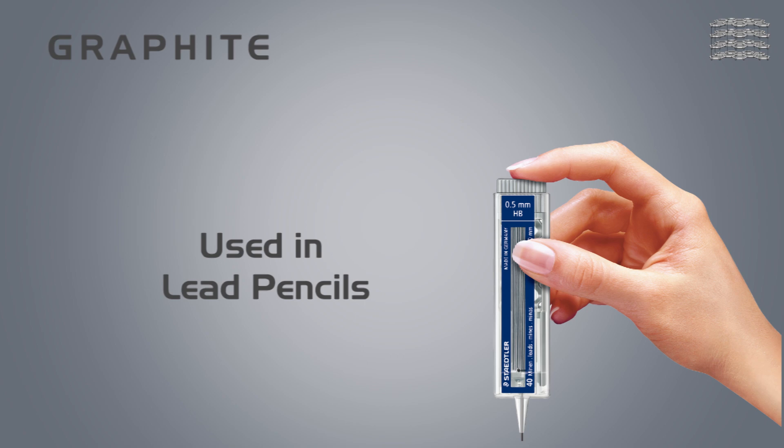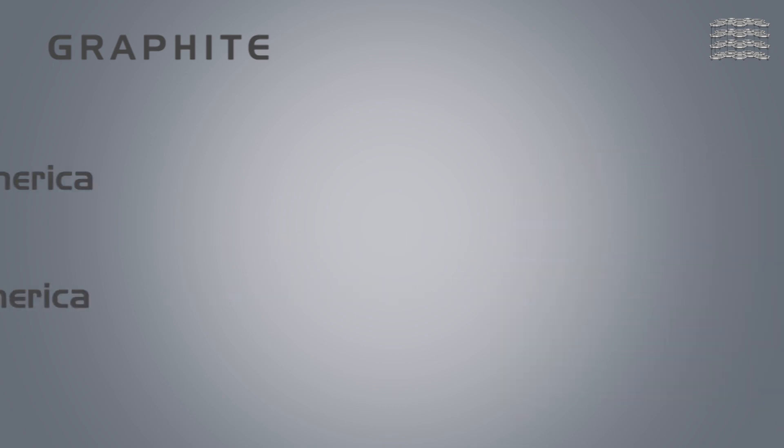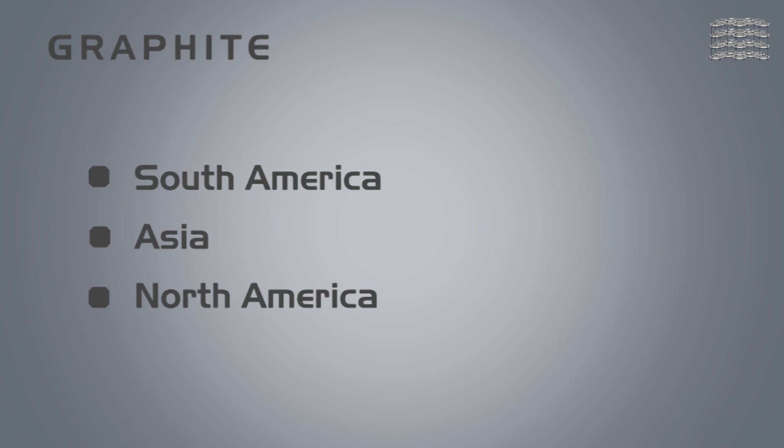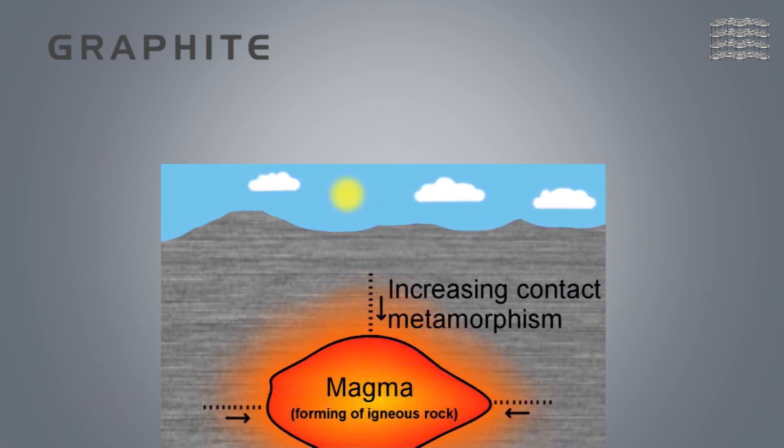Graphite is found naturally in metamorphic rocks in most continents, including South America, Asia, and a few parts of North America. Graphite is formed when reduction of sedimentary carbon compounds results from metamorphism.